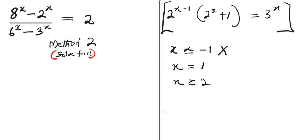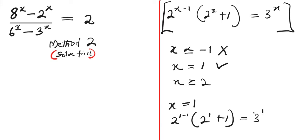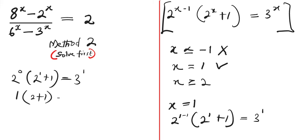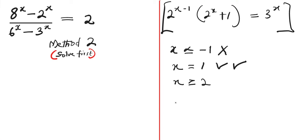Let's check when x = 1: we have 2^(1-1) · (2^(1+1)) = 3^1. That gives 2^0 · 2^2 = 3, so 1 · (2 + 1) = 3, which means 1 · 3 = 3. Since 3 = 3, this is correct — x = 1 is indeed one of the solutions, confirming our earlier result.